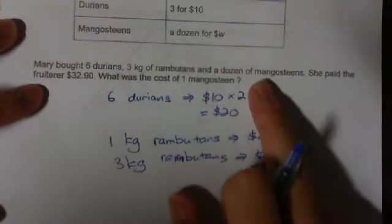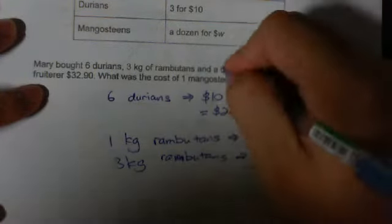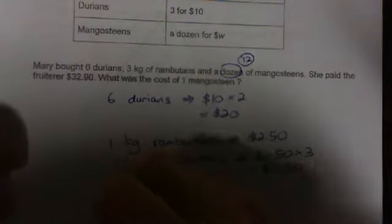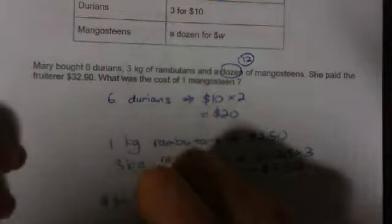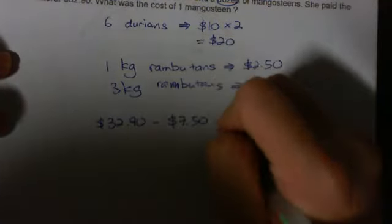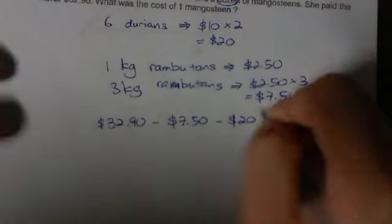Now what is left is actually all mangosteen. She bought a dozen of mangosteen. A dozen is actually 12. Let's find out how much mangosteen cost first.